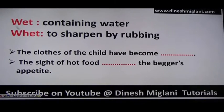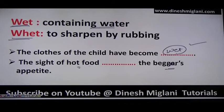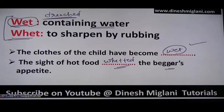Next: wet (W-E-T) means containing water. Whet (W-H-E-T) means to sharpen by rubbing. Examples: 'The clothes of the child have become wet.' 'The sight of the horde of food wetted the beggar's appetite' — meaning it aggravated the hunger. Note: wet means slightly damp (gila), while drenched (D-R-E-N-C-H-E-D) means heavily soaked.